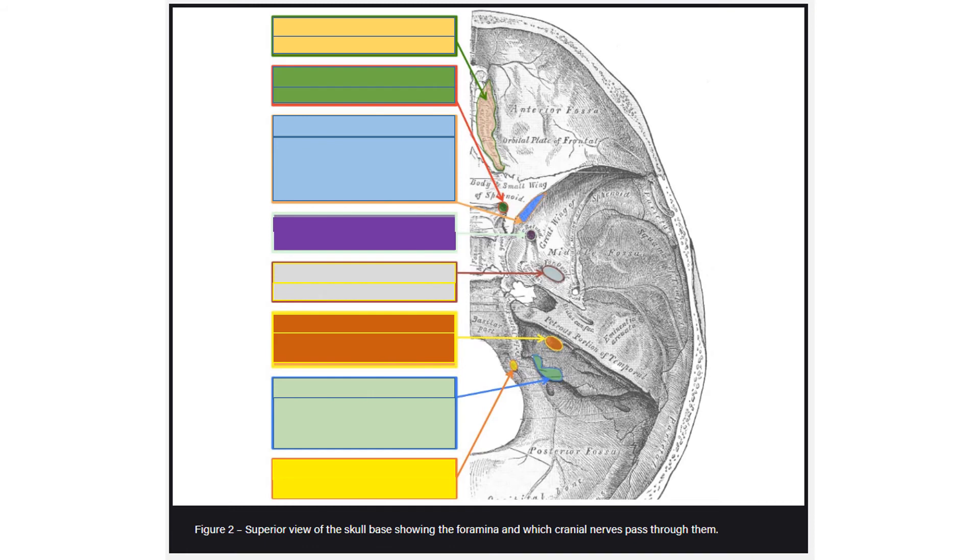Now let's look at the foramina. This figure shows a superior view of the skull base, showing foramina and which cranial nerves pass through them. We'll start at the top and work our way down.